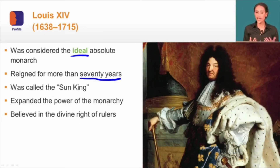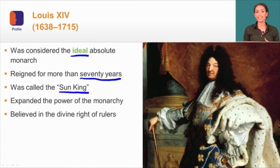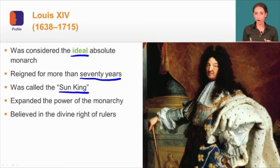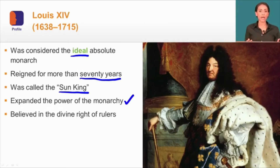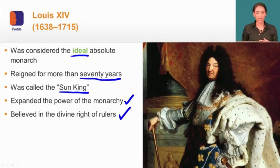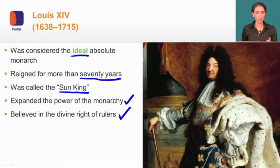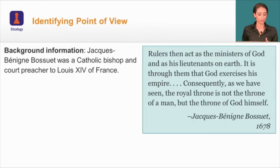Louis XIV fancied himself the Sun King — he saw himself as the center of the French universe. He used this belief to expand the power of the monarchy, and like many other absolute rulers, he believed in the divine right of rulers, this God-given right. Most of his support came from the court surrounding him.